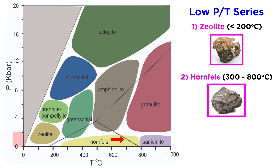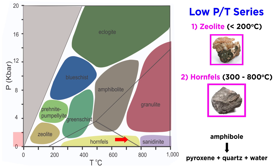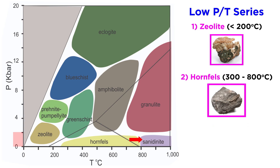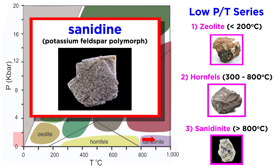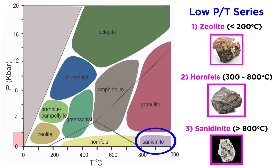Hornblende is a calcium amphibole that appears over a wide range of metamorphic conditions. At around 650 degrees Celsius, it becomes too hot for the water-containing amphiboles to exist, and they break down into pyroxene plus quartz plus water. These conditions mark the pyroxene hornfels facies. Finally, at a temperature of 800 degrees Celsius and a pressure of only 2 kilobars, we reach the sanidinite facies, where the potassium feldspar polymorph sanidine forms. However, these conditions are rare, since it is difficult to attain such high temperatures so shallow in the crust.